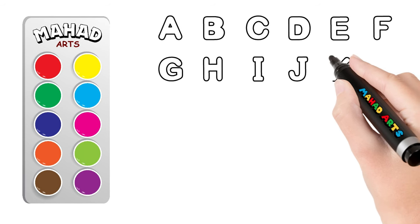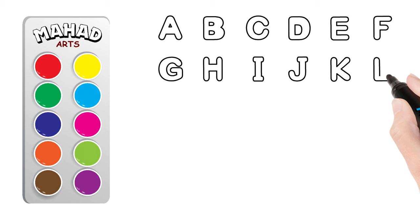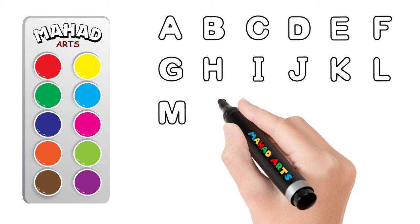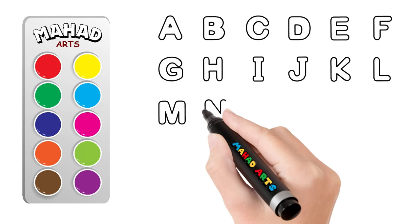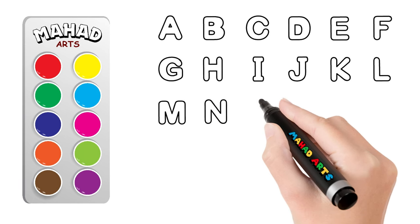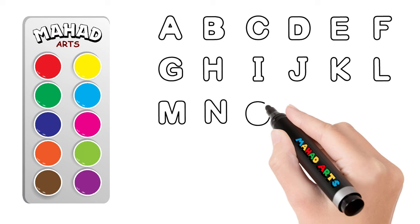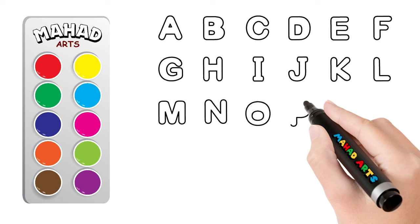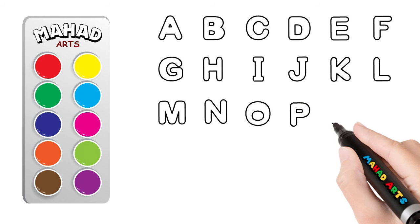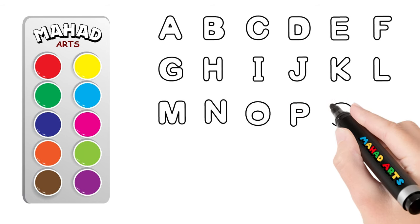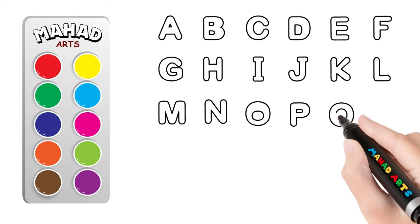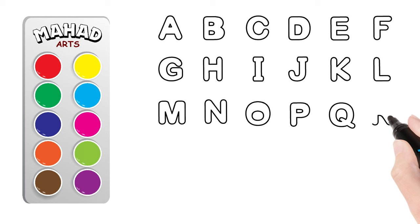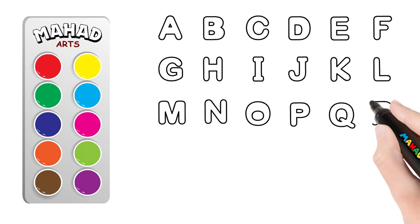Now I know my ABCs, next time won't you sing with me. A B C D E F G H I J K L M N O P Q R S T U V W X Y and Z. Now I know my ABCs, next time won't you sing with me.